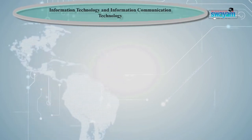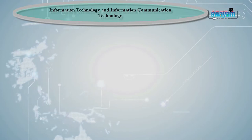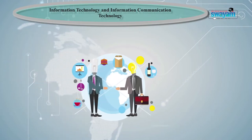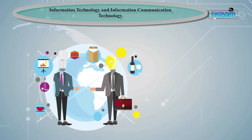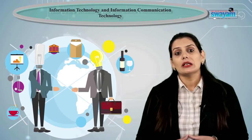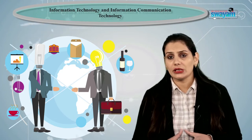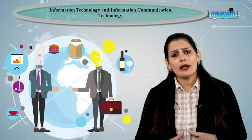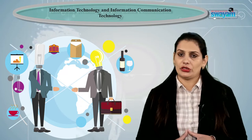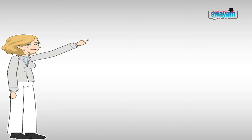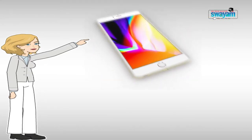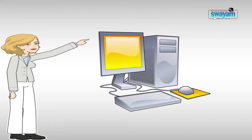Information technology and information communication technology: ICT is an extension of the term information technology with the addition of 'communication,' which signifies the whole difference between these two. Information technology generally refers to the whole industry which uses computers, networks and other software for storing and sharing data or information. On the other hand, the term ICT includes other communication devices like radio, television and smartphone along with the computer for receiving, storing, retrieving, manipulating and transmitting information digitally. It is commonly used in the academic arena and generally described as one of the specialised branches of information technology.